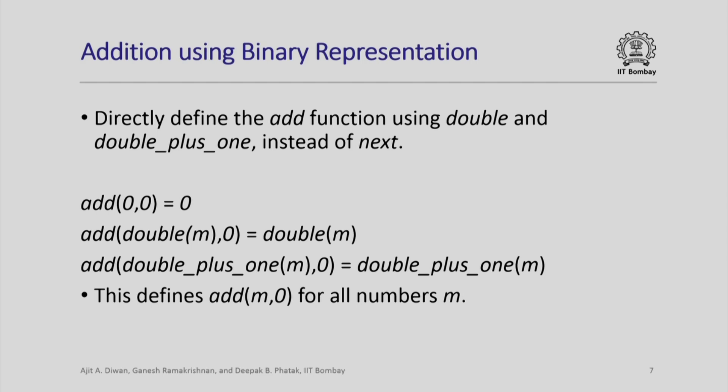So let us try to define the add operation using binary representation. add(0, 0) = 0; add(double(n), 0) = double(n); and add(double_plus_1(n), 0) = double_plus_1(n). This defines add(n, 0) for all numbers n, which is always equal to n.